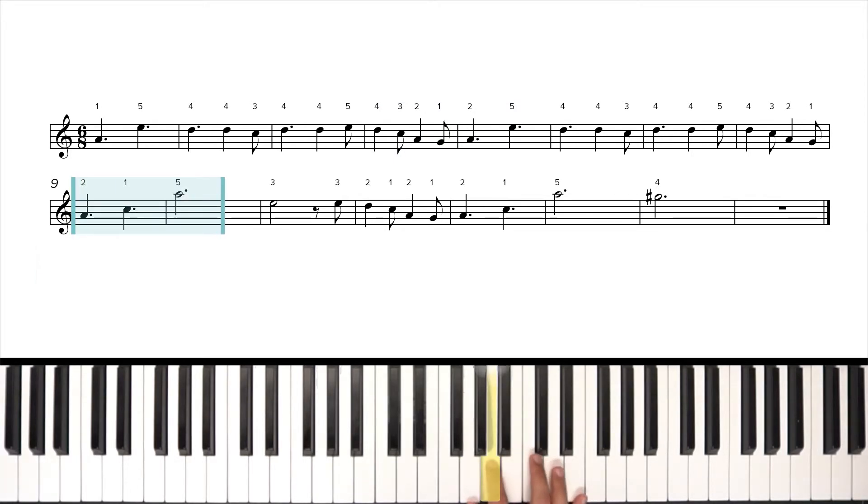As soon as we do that, we're going to reach high again by bringing our thumb under to C, pinky up to high A, a big jump. Three on E. Same idea here. We're going to go back down, two over thumb, and then thumb right back under to C again, ending it with a G sharp.